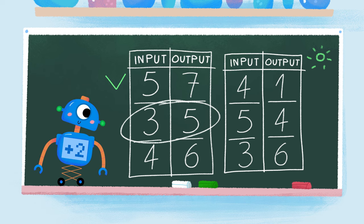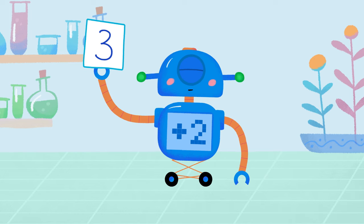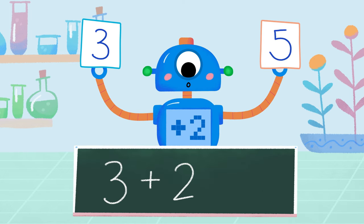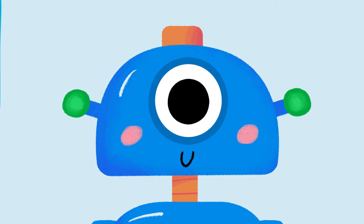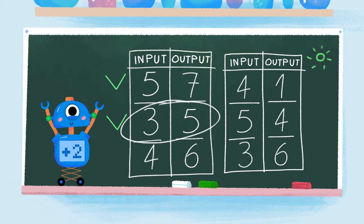Let's check one more input. Look. Input three. And the output is five. Three plus two is also five. This is it. We found the rule. The robot's rule works for this table.